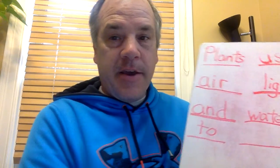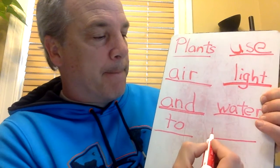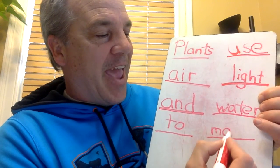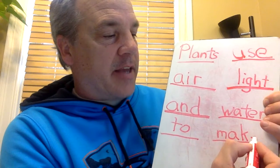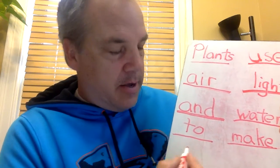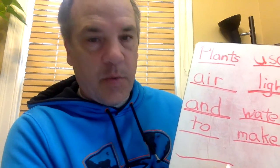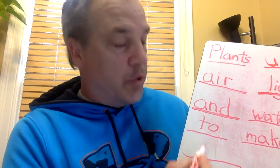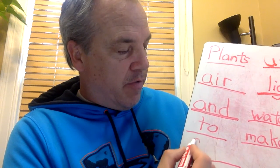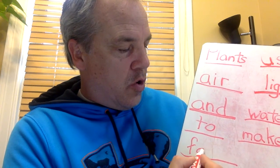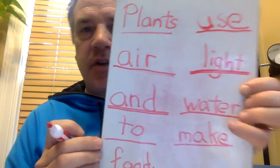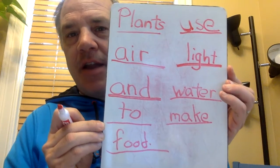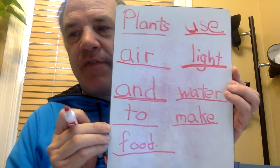Now 'make' — let's sound that out: M-A-K, and then the silent E. Plants use air, light, and water to make food. Period.